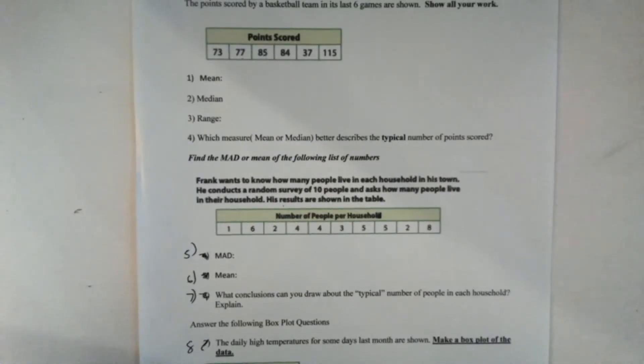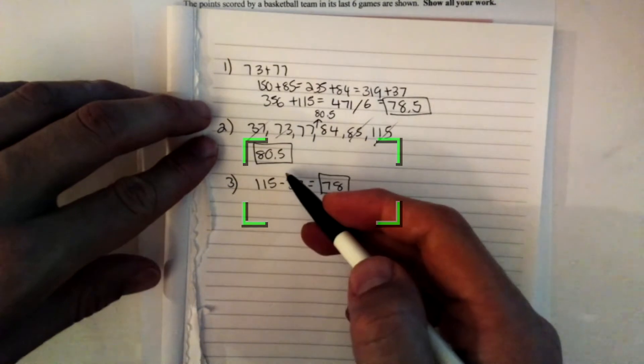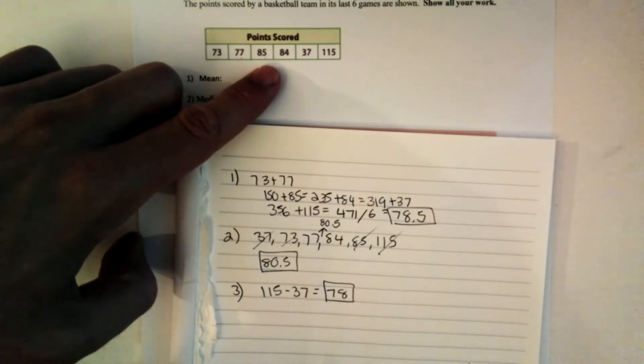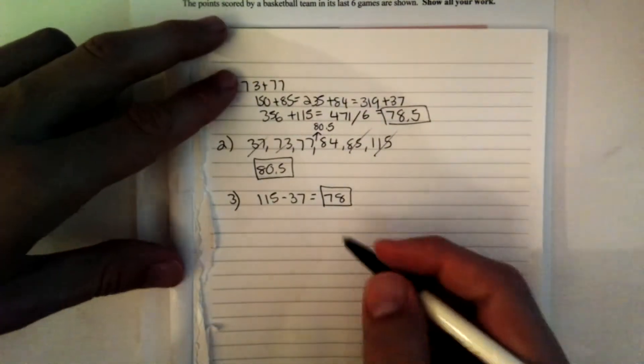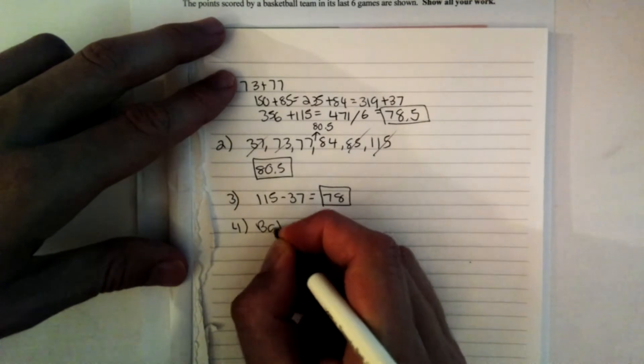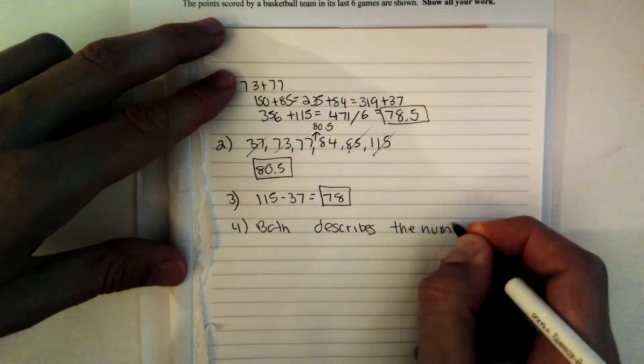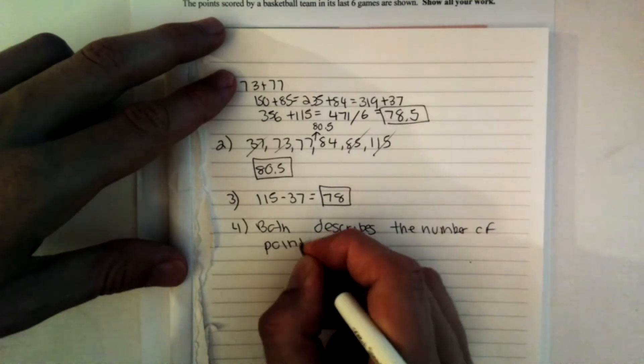Look at number 4. Which measure, mean or median, best describes the typical number of points scored? Remember, we're looking for the middle number or the average of the following data set here. That actually represents the data. Does the mean and the median actually give a fair assessment of the points scored? Well, remember, our mean and median are 78.5 and 80.5. I would say that's a pretty fair assessment of the points scored. Because if you look at the other numbers there, it appears to be about in the middle. So I would say that not just one, but both describes the number of points equally well.